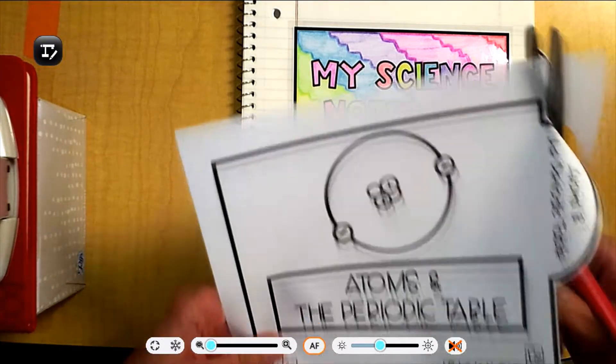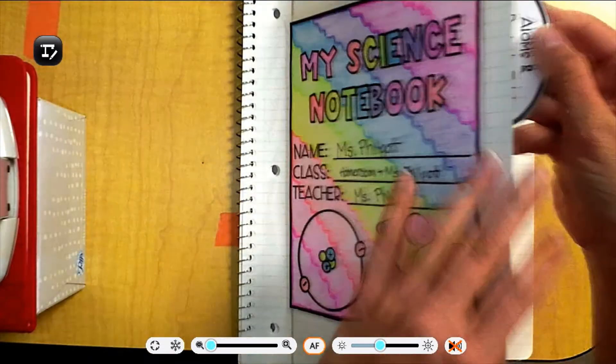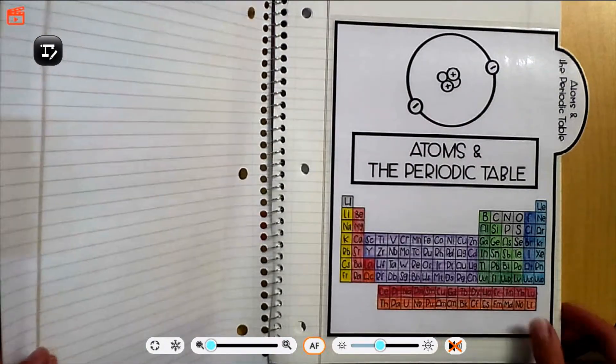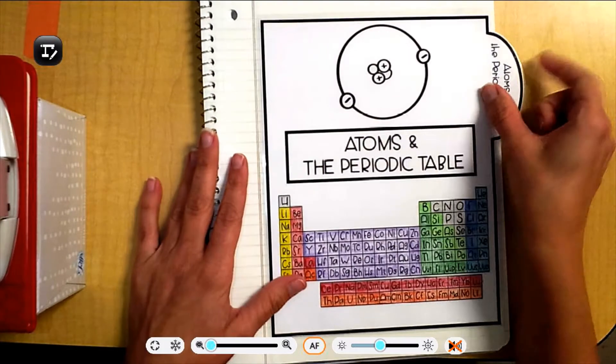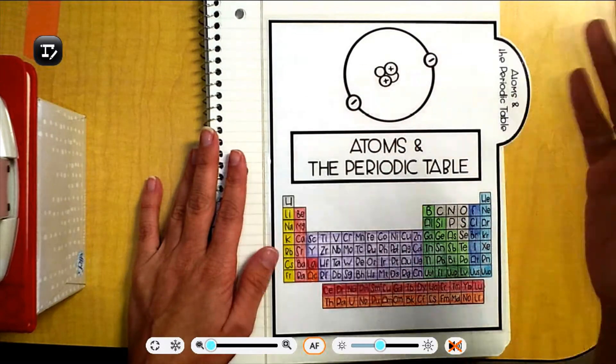Okay. So once you're done cutting it out and coloring it in, you are going to glue it to the next page, the front page with the spiral on the left of your notebook. And you want to make sure that the little tab is hanging off of the edge. Because this is how you're going to find easily when we start on new units that are later.